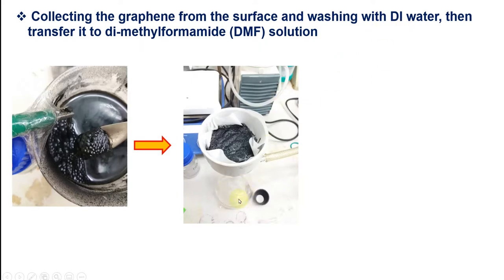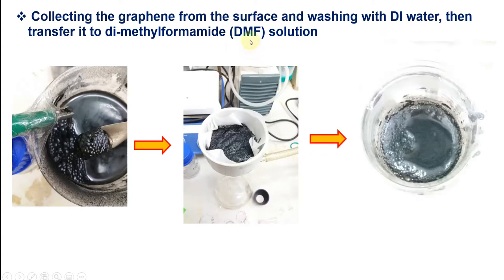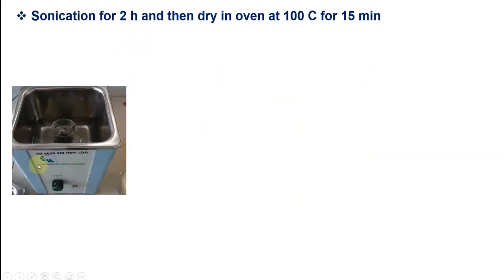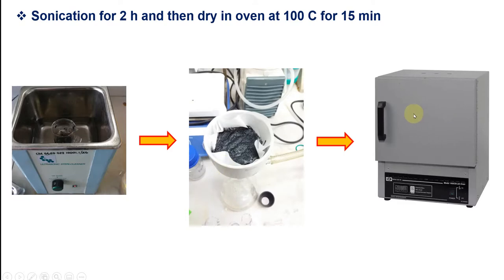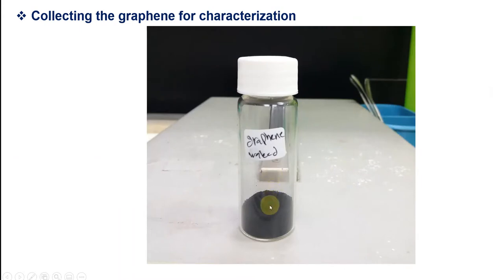I transfer it to DMF solution because it can suspend and dissolve a lot more graphene than water. I put it in sonication for two hours. After two hours, I collect it and put it in an oven at around 100 degrees for 15 minutes to dry and evaporate all the DMF solvent. Finally, I collect it using a spatula, scraping and removing it from the surface of the filter paper for further characterization.